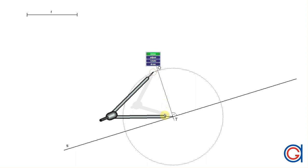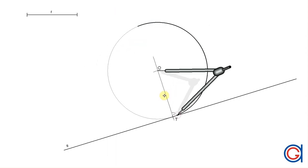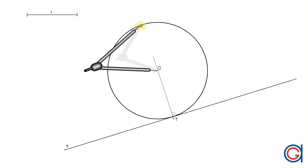So now with the same radius, setting the compass on origin o with a thicker line, we are going to draw the circle. And this circle is the tangent circle to the given line s going through tangent point t.